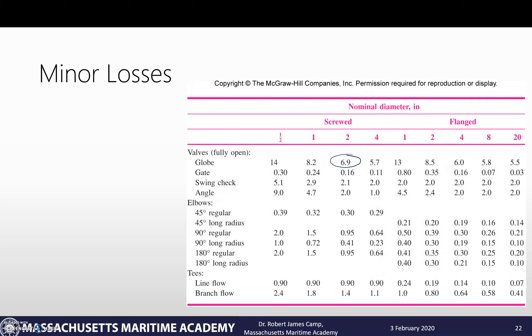While we're here, later in the problem as we work our way down, we also have a screwed 90 degree regular elbow, so we'll just get that value also. It's 0.95.